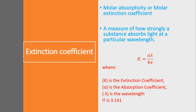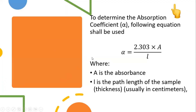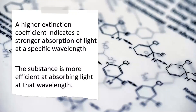Using this formula, we will measure the extinction coefficient. To measure alpha, the absorption coefficient, as I already discussed in my previous lecture on optical density measurements, the following equation is used: alpha is equal to 2.303 multiplied by A, divided by l. Here, A is the absorbance and l is the path length of the sample — the thickness of our cuvette — which is usually in centimeters.